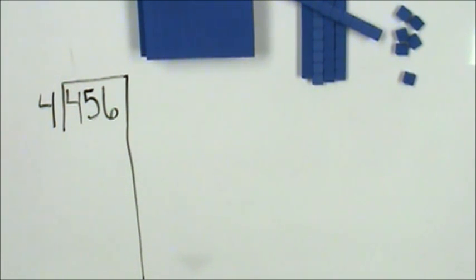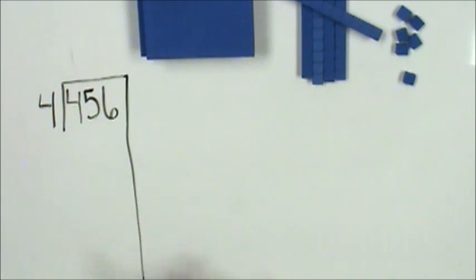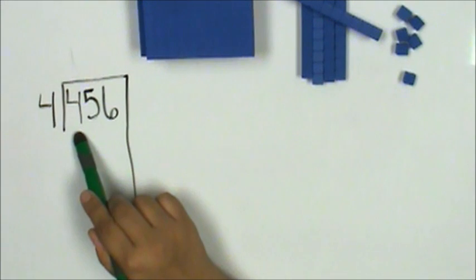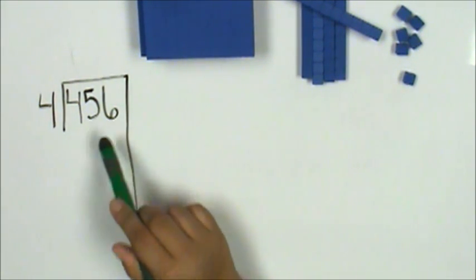The first thing students have to do is think about how the number 456 is composed. It's composed of 400, 5 tens, which is 50, and 6 ones.